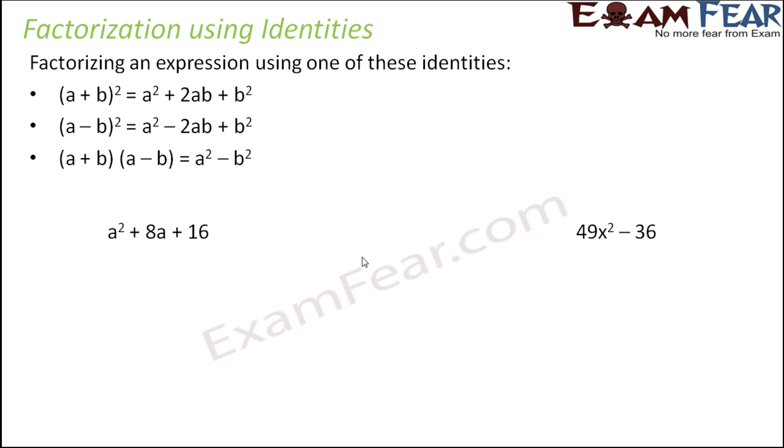So let us take one example. Let's say you have an expression like this: a² + 8a + 16. How can you factorize this? Now if you try to find out factors in this case, it's very difficult because a² is a quadratic term (that is a to the power 2), this term is linear (that is a to the power 1), and this term doesn't have any variable. So it's very difficult to factorize this the way we were doing in type 1 and type 2.